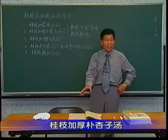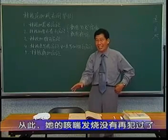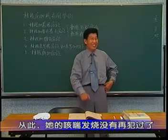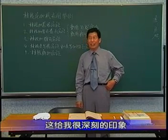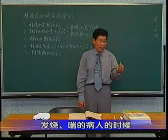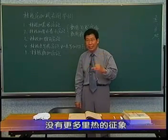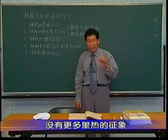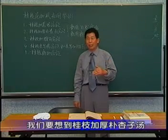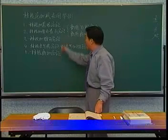任老师说你看这孩子的脸色这么淡白，舌象这么淡白，不能再用清热药了，用桂枝加厚朴杏子汤。所以这个孩子就吃了一个星期的桂枝加厚朴杏子汤，说来也怪，从此他这个咳喘发烧没有再犯，这给我很深刻的印象。所以当我们遇到一个发烧喘的病人的时候，如果他是舌质淡的，没有更多的里热的征象，我们不一定就想到麻杏石甘汤，我们要想到桂枝加厚朴杏子汤。好，这是第二个加减方，桂枝加厚朴杏子汤。